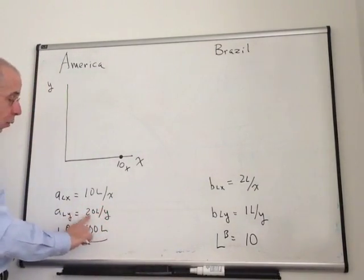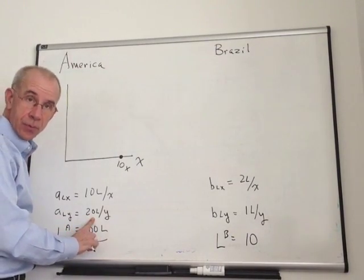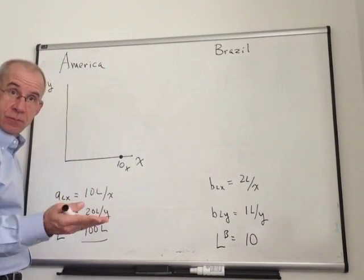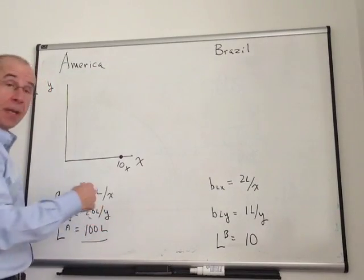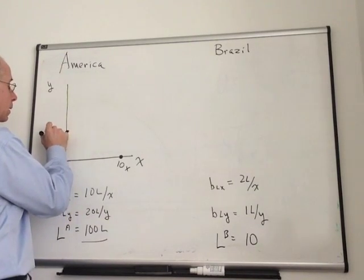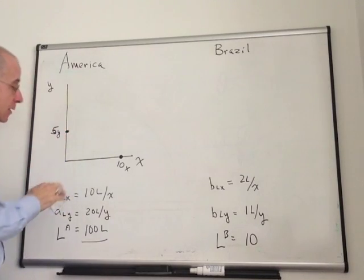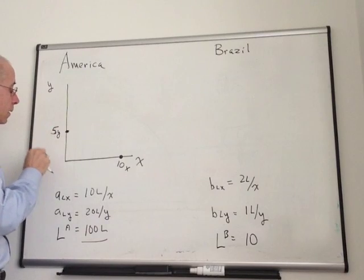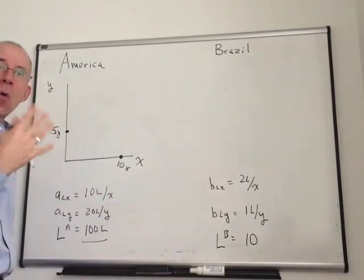If you take a look at Y, it takes twice as many workers to produce one unit of Y, 20 rather than 10 for X. So you're going to be able to produce half as many. So it would be a point equal to 5Y. So 5Y can be produced, or 10X can be produced, or anywhere in between.